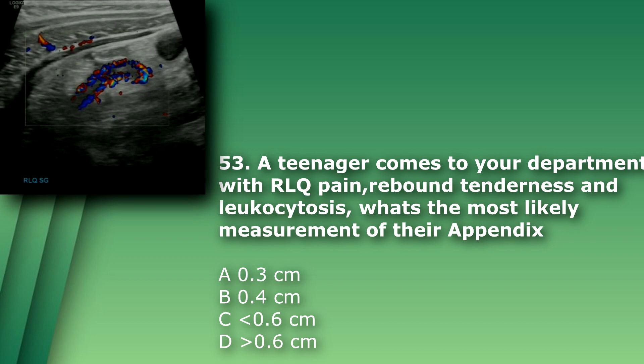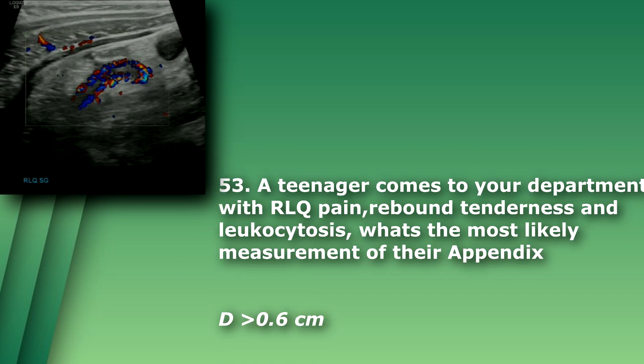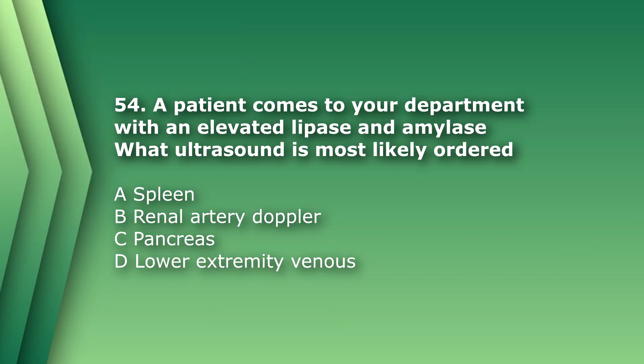Question 53 (appendix): A teenager comes to your department with right lower quadrant pain, rebound tenderness, and leukocytosis. What is the most likely measurement of their appendix? A) 0.3 cm, B) 0.4 cm, C) less than 0.6 cm, D) greater than 0.6 cm. The answer is D — this patient most likely has appendicitis, and the normal appendix measures less than 0.6 centimeters.